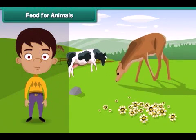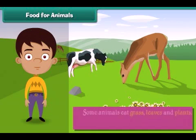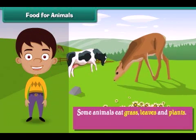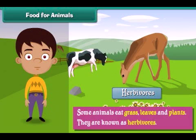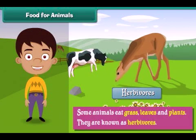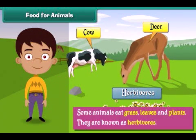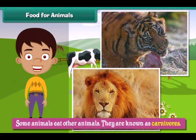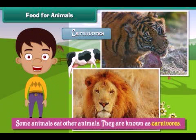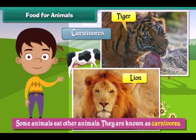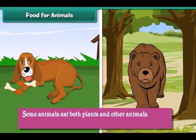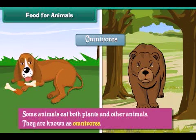Some animals eat grass, leaves and plants — they are known as herbivores. Examples of herbivores are cows, deer etc. Some animals eat other animals — they are known as carnivores. Examples of carnivores are lions, tigers etc. Some animals eat both plants and other animals — they are known as omnivores. Examples of omnivores are bears, dogs etc.